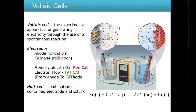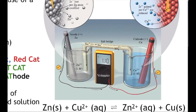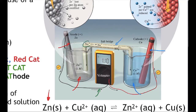Here's a voltaic cell — one in which a spontaneous reaction occurs and electrons flow just by setting up the cell as shown. We have the zinc half reaction components on the left: zinc 2+ solution and a zinc solid electrode. On the right are the cathode components: copper 2+ solution and a copper solid electrode. A salt bridge — in this case made of sodium sulfate — connects both half cells. Sodium ions move towards the right toward the cathode, and sulfate ions move towards the left toward the anode.